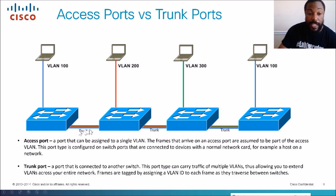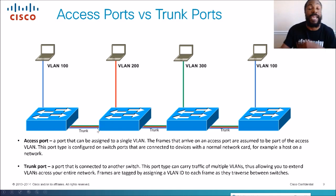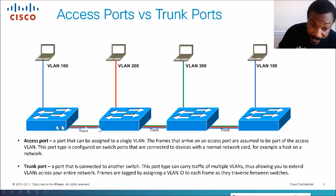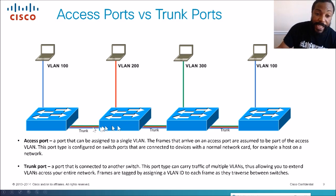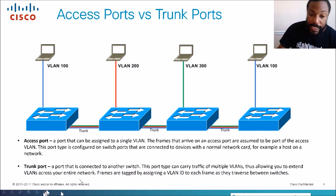Then we have trunk ports. They connect to another switch — but it doesn't necessarily have to be another switch, it could be a router on a stick connected to a trunk port. Basically a trunk port carries all the VLANs. VLAN 100 on this access port also comes across this trunk port. The trunk port carries multiple VLANs, allowing the VLAN to span across our network.